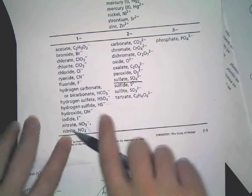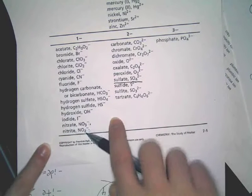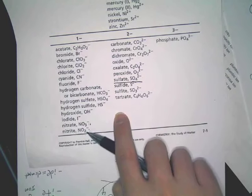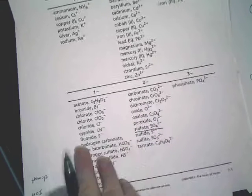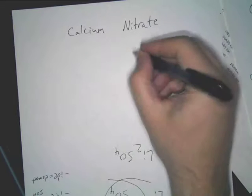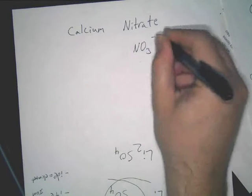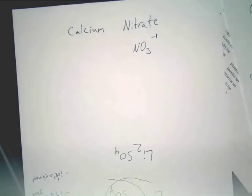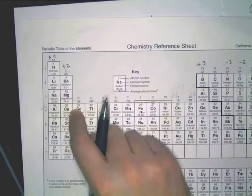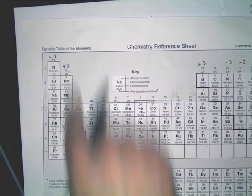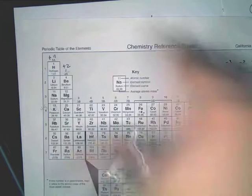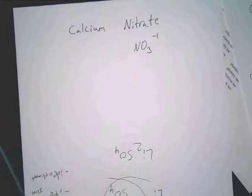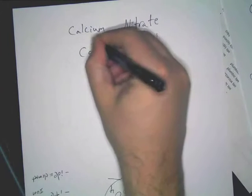Make sure that you don't goof it up with nitrite. That's NO2. I know you're like, well, that's not a big deal, but it's a completely different chemical. So don't goof it up. So nitrate is NO3 with a negative 1. And then calcium, it's Ca. It's got a positive 2.